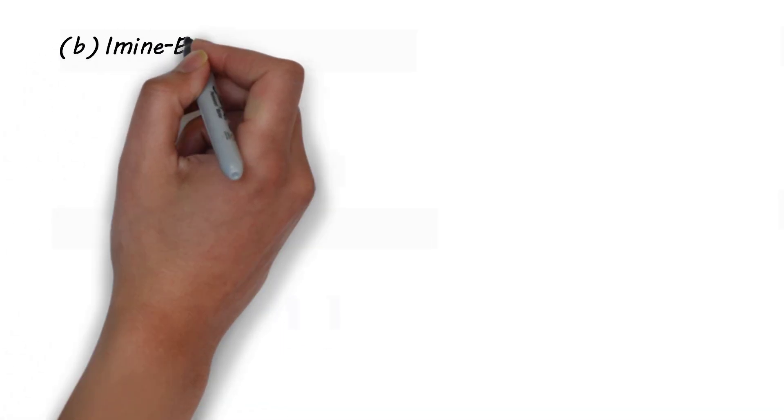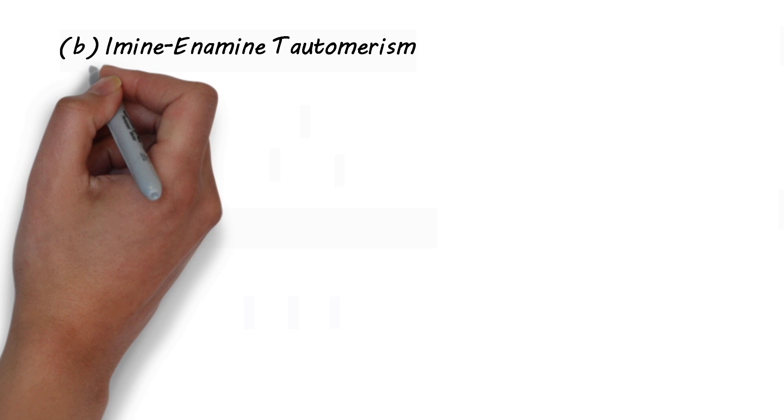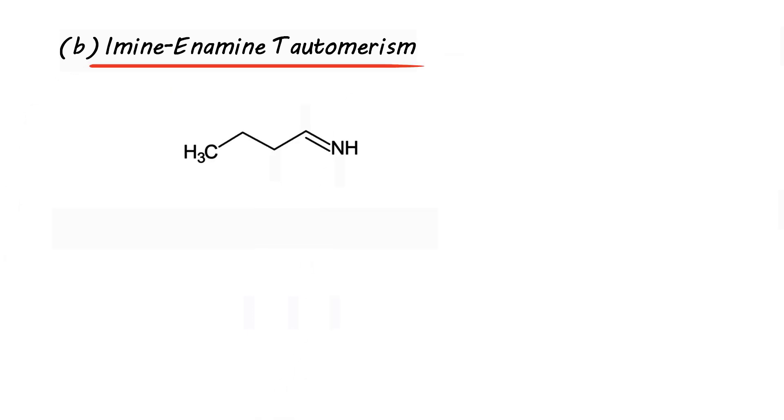Apart from keto-enol tautomerism, we have several more. That is imine-enamine tautomerism. This molecule is an imine. It does have a structural feature XYZ. Clearly hydrogen is migrated from X to Z to get enamine. So this is imine-enamine tautomerism.